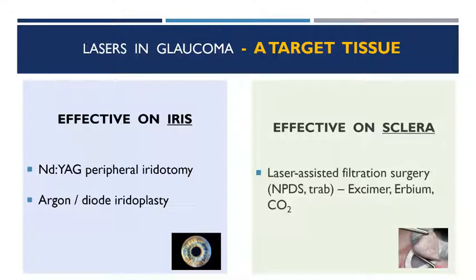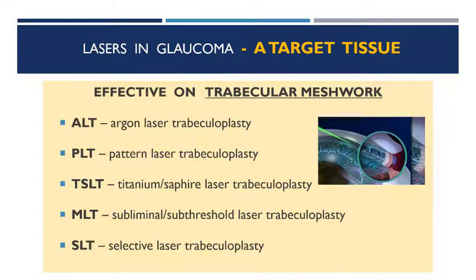Briefly about the first part: lasers effective on the iris. In this group we have our good old iridotomy and iridoplasty. The other group is lasers effective on the sclera, where they can help in non-penetrating deep sclerotomy or trabeculectomy — not very widely used, but there are erbium and CO2 lasers. Today we are going to focus on the other two tissues: trabecular meshwork and ciliary body.